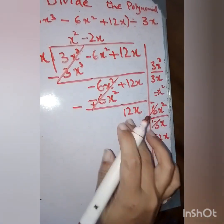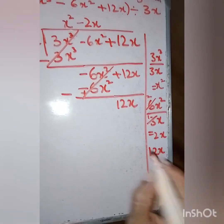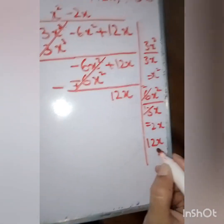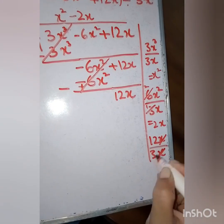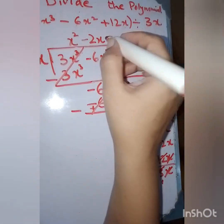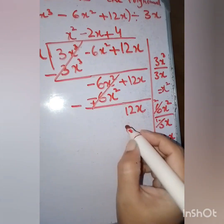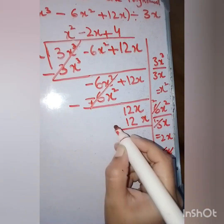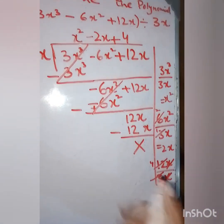We have 12x. Repeating the same step, dividing 12x by 3x: x and x cancel, and 12 divided by 3 is 4. So the answer is 4. Multiplying 4 by 3x gives 12x. On subtracting, the remainder is 0.